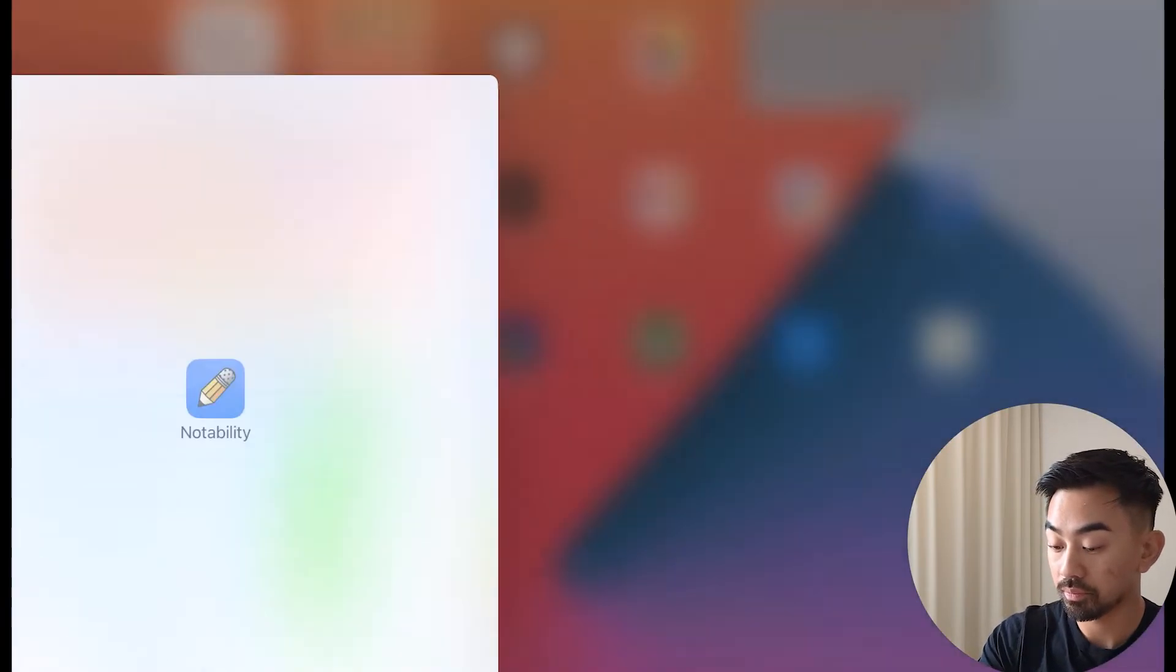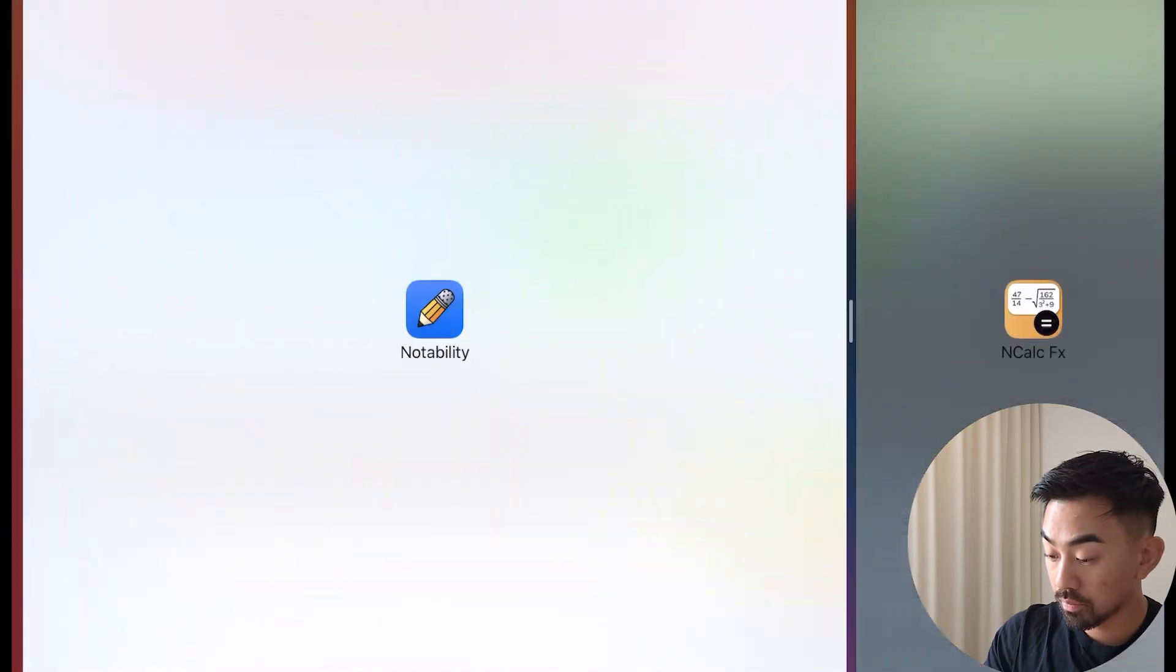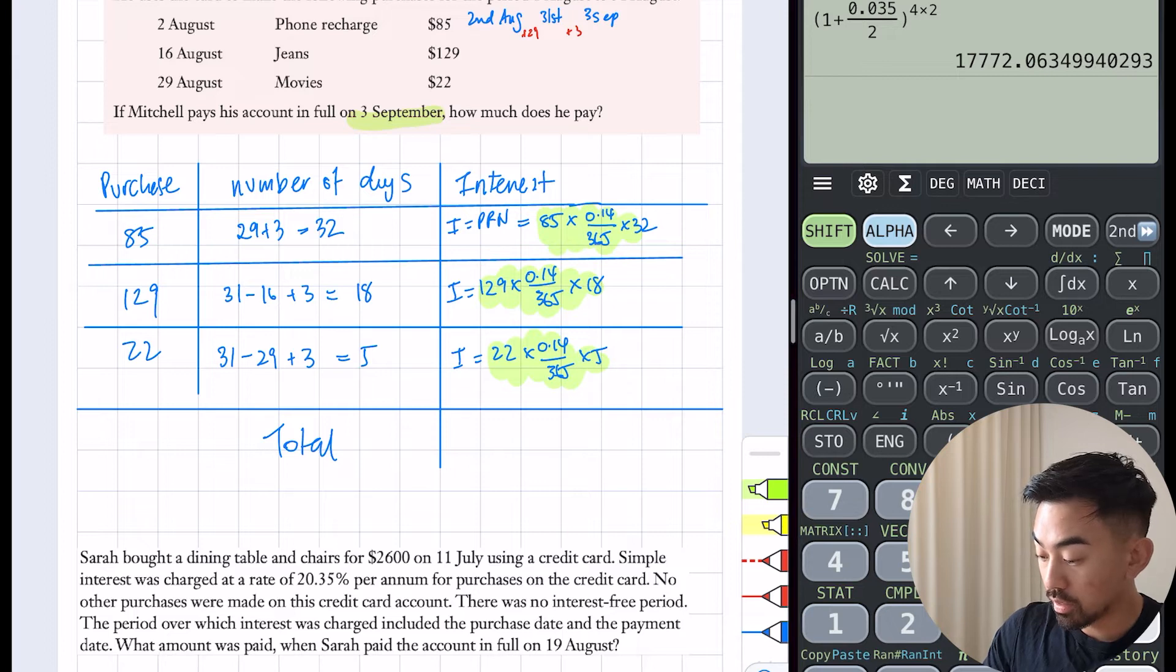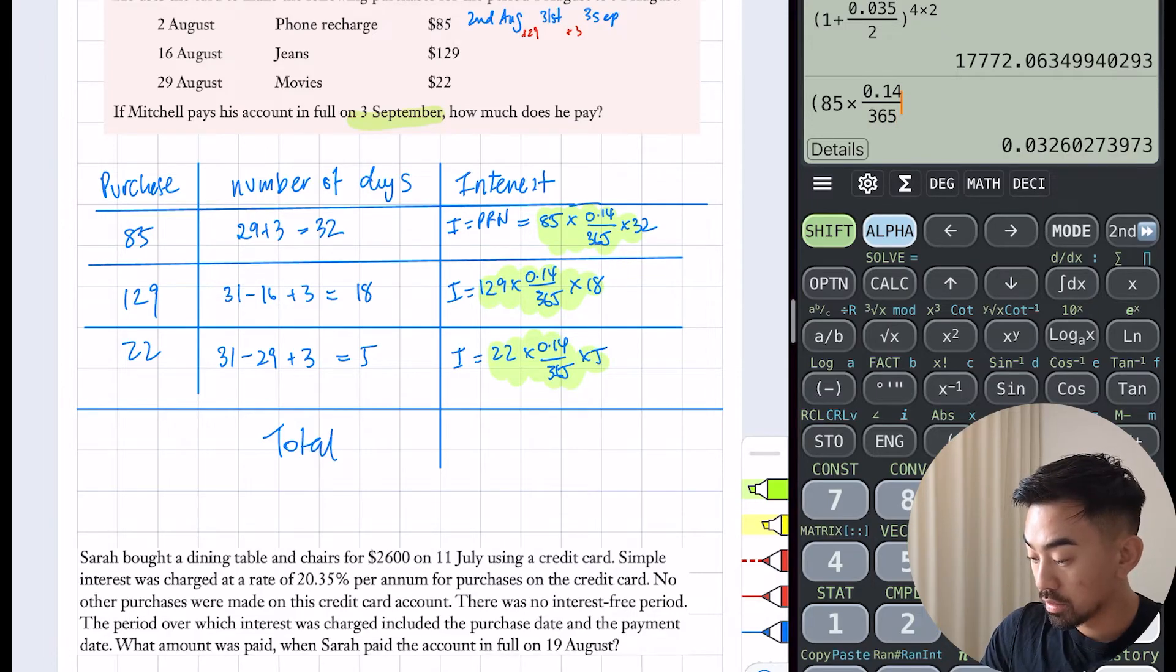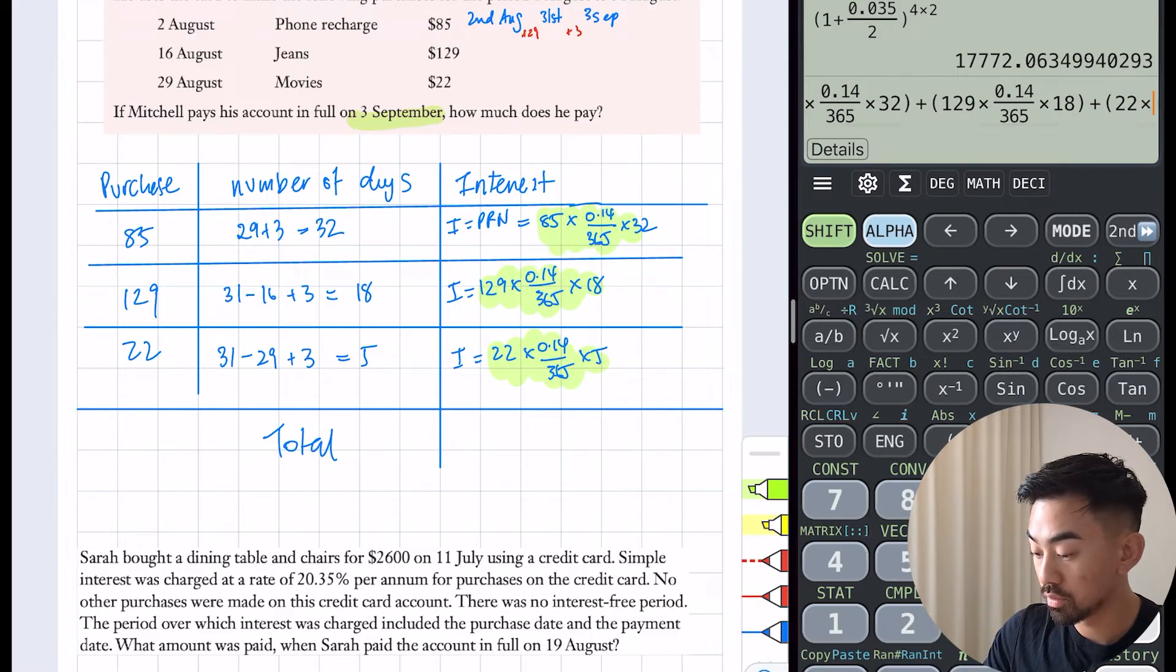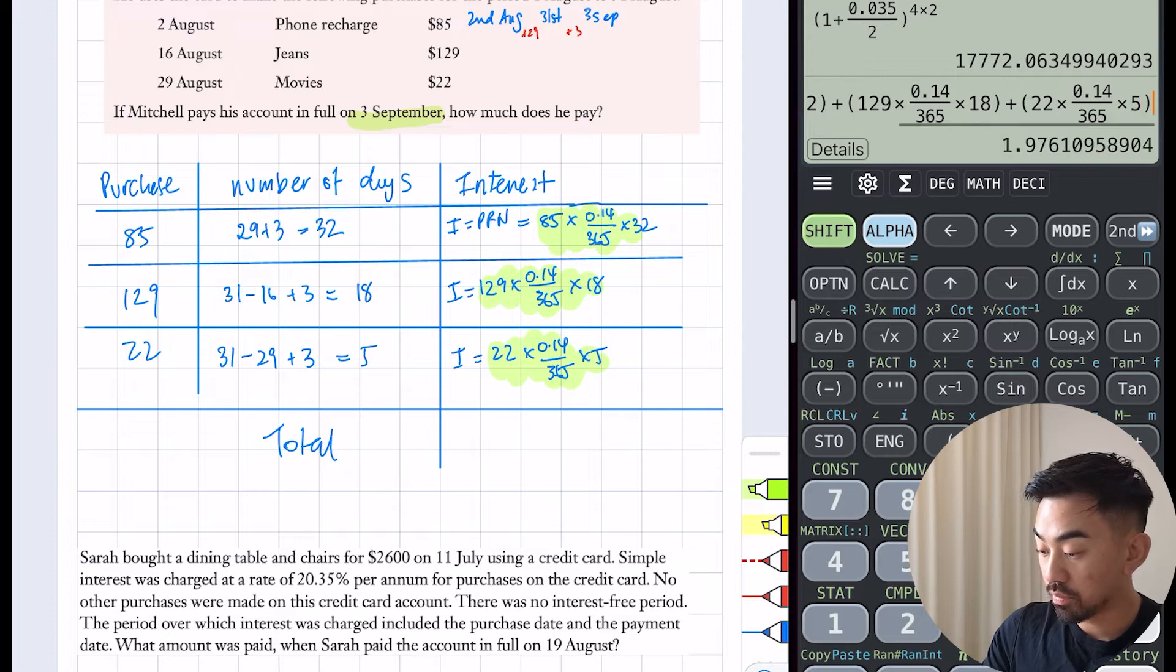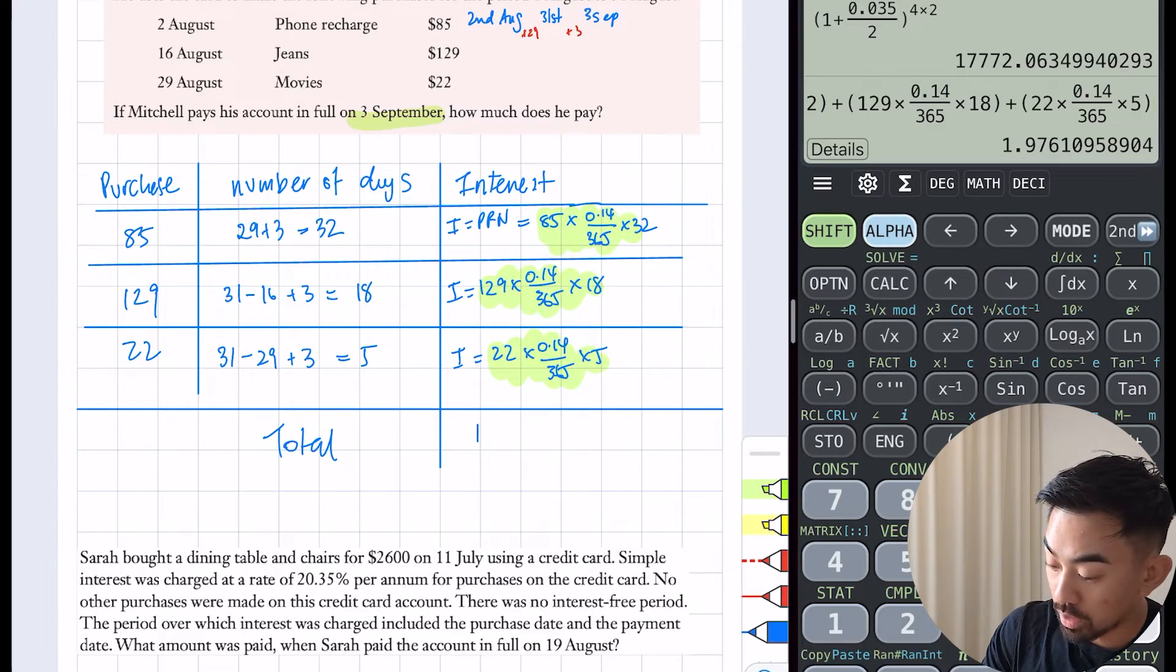I just need to add up all those highlighted sections there. So 85 times 0.14 over 365 times 32, plus 129 times 0.14 over 365 times 18, plus 22 times 0.14 over 365 times 5. My total interest here looks like it is $1.98 to the nearest two decimal places.